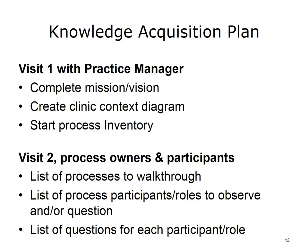Your initial meeting will often be with the practice manager or the individual charged with EMR selection. This meeting can be short — two to three hours — depending on whether you add introductions with practice providers and staff. In this initial meeting, you can complete collection of the mission or vision, create a clinic context diagram, and start the process inventory. For visit two, you will likely meet and interact with more people as you use process walkthroughs or interviews to gather information. For visits two or more, you will need a list of processes to walk through, a list of process participants and roles to observe and question, and a list of questions for each participant or role.